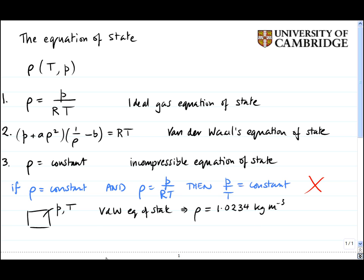Would you then say, hold on, I'm also going to use the ideal gas equation of state, in which case you might find that the density is 1.0197 kilograms per meter cubed? Well, no, of course not. A fluid can't have two definitions of the density at the same time. You can only use one equation of state at any one time.